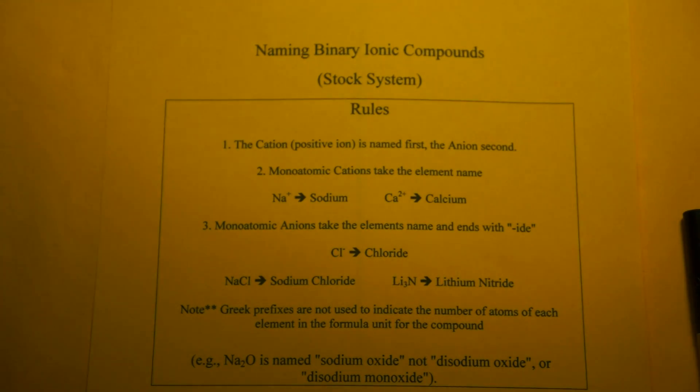This video is going to cover binary ionic compounds and how to name them using the stock system. The rule is the cation, your positive ion, is named first, and the anion is named second. So first name, last name - positive ion, negative ion.